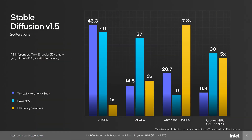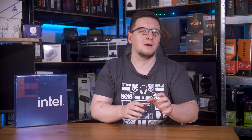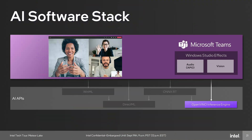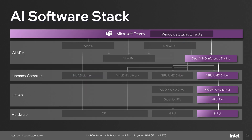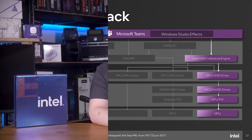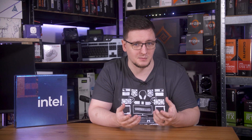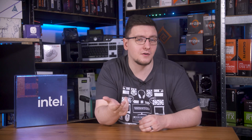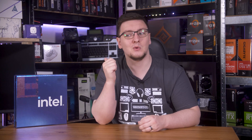Intel showed results from Stable Diffusion with 20 iterations: the CPU alone drew 40 watts for 43 seconds; the GPU took just 14.5 seconds at 37 watts; but the NPU, while taking longer than the GPU at 20.7 seconds, only drew 10 watts, making it almost eight times more efficient than the CPU alone, while leaving the CPU and GPU free for other work simultaneously. This NPU will be on every SKU — no matter if it's an i3 or an i9, it will have an NPU, and that's a pretty big deal.